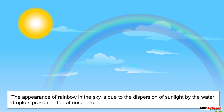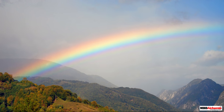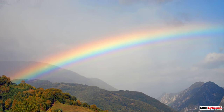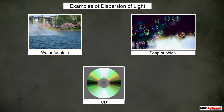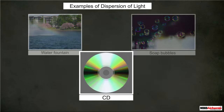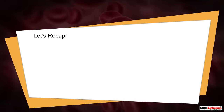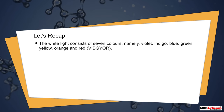Dispersion of light not only results in the formation of a rainbow but we can also see this effect in our day-to-day life. For example, the beautiful band of colors we observe in water fountains, soap bubbles, and CDs are all due to dispersion of light.